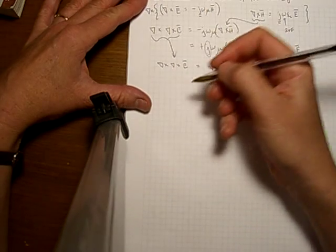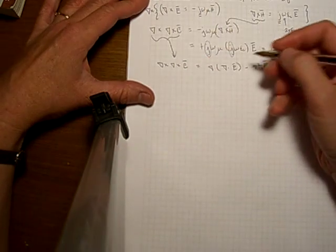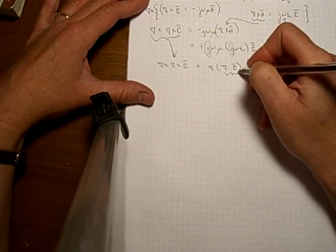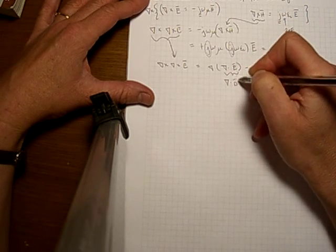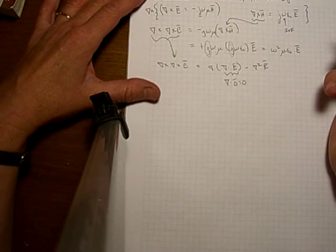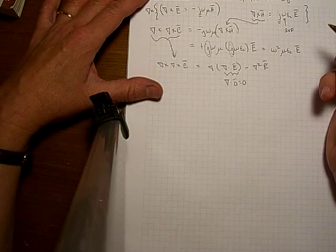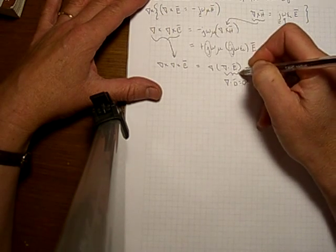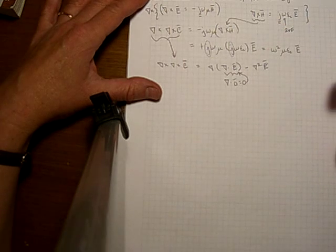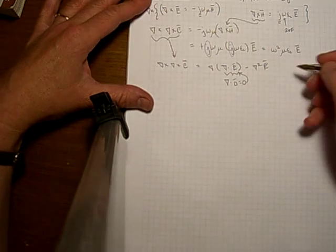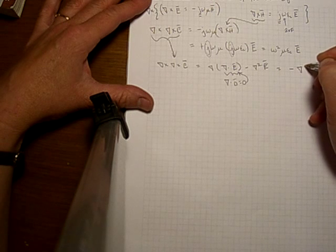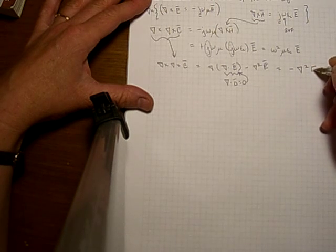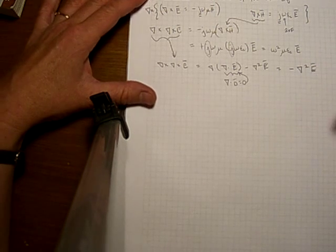So we can instead say let's substitute in here. Remember this form of Maxwell's equations for a source free region when we have no charges? That's what we're going to substitute in here. So this term becomes zero and we get that this is just minus the Laplacian. That's what we call this operator, the Laplacian of the electric field.